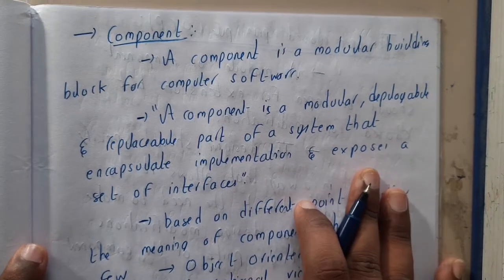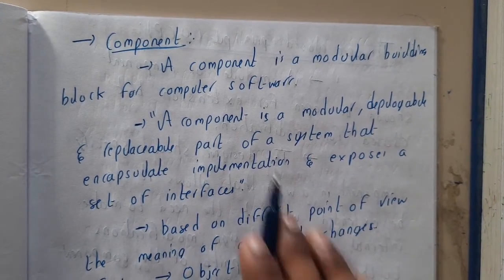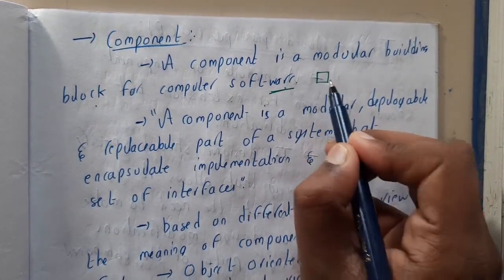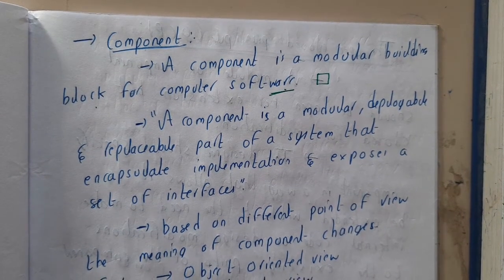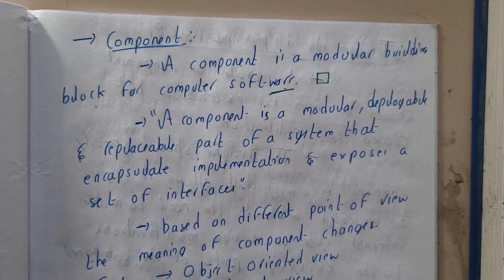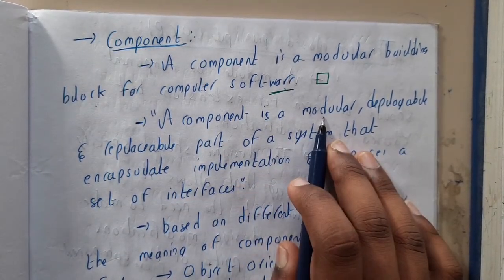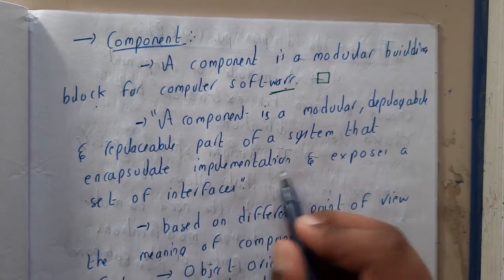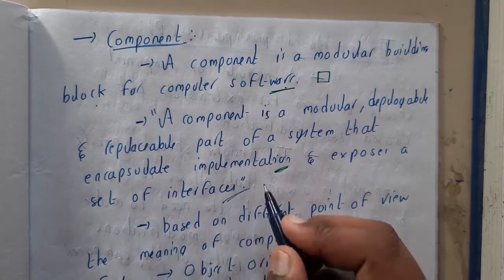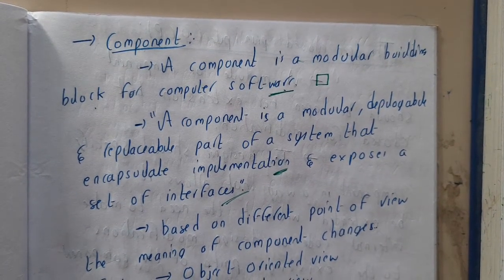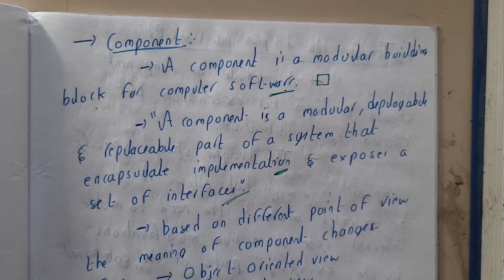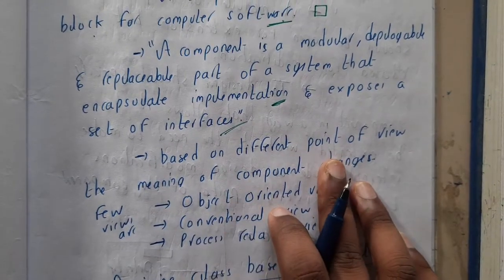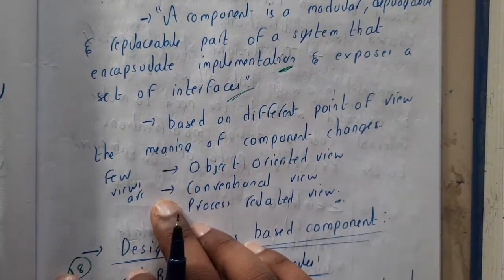You might be having a question: what is a component? A component is a module or a building block of computer software — a small module of a huge project or program. A component is a modular, deployable, and replaceable part of a system that encapsulates implementation and exposes a set of interfaces. It is connected to multiple components and performs a particular functionality.